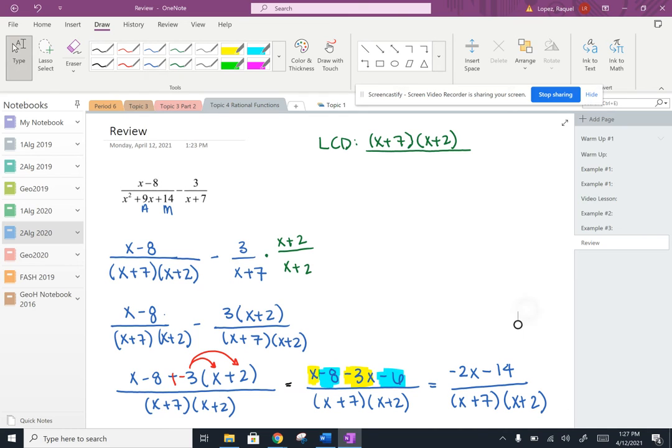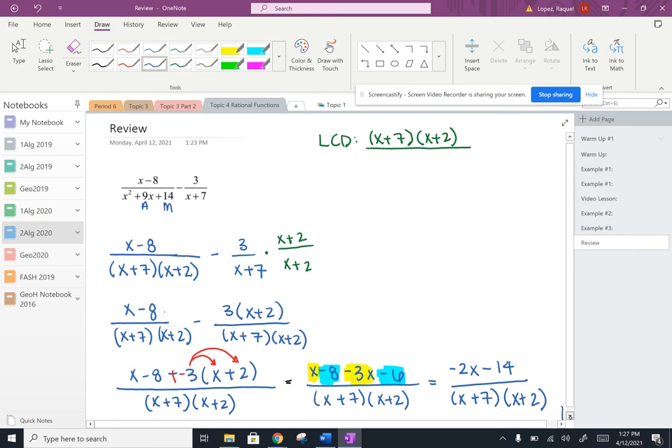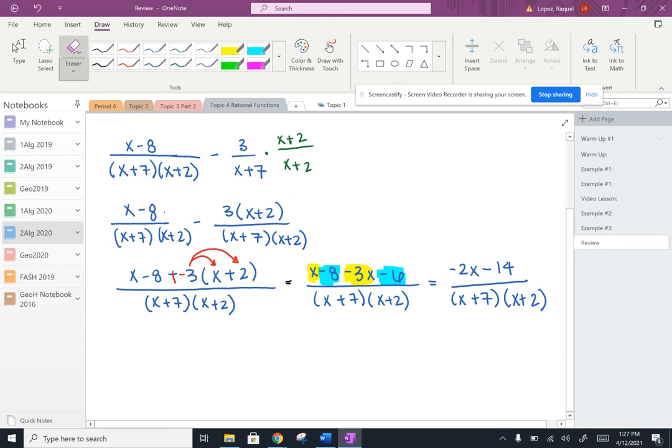And then we are almost done here. So what I can do is now we want to make sure that we simplify. So in the numerator, I notice that I can factor out a negative 2. So I'm going to rewrite this fraction. Actually, let me write this over here. So negative 2x minus 14, all over x plus 7 and then x plus 2.